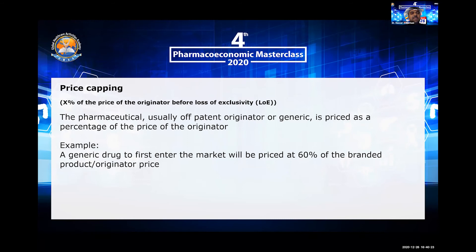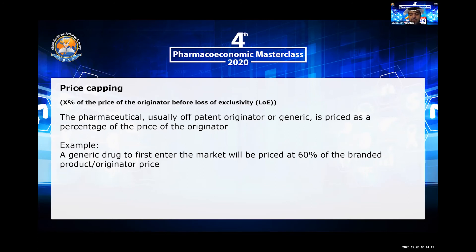Another technique widely used to price generic medications is price capping. It is the pricing of a product as a percentage of the originator's price before loss of exclusivity. For example, if a generic medication wants to be registered in a given country to enter the market, it will be priced at, say, 60% or 30% — or whatever percentage has been identified by the regulator — of the branded originator price.